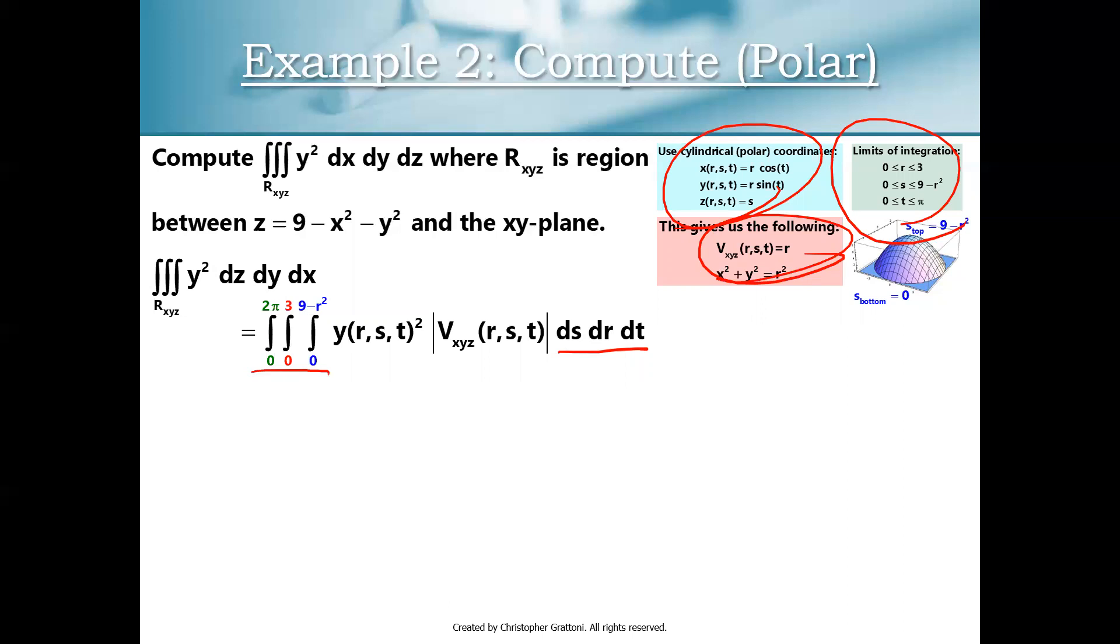You can kind of match those up with the previous slide if you'd like. I'm going to use my Jacobian determinant of r. And then the only other thing I need to do is my y squared here needs to become y of rst squared. And we know that y of rst is r sine t. So this entire integral starts to squish together pretty nicely. We have r sine squared t times r. So this is r sine squared t quantity squared. So that's going to become r squared times r, which is r to the third. And then sine squared is just sine squared there.